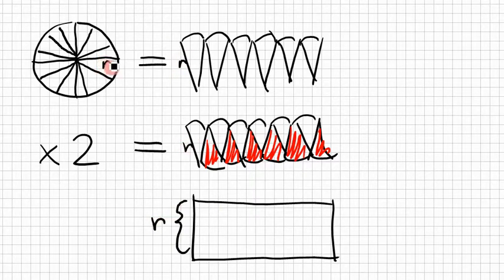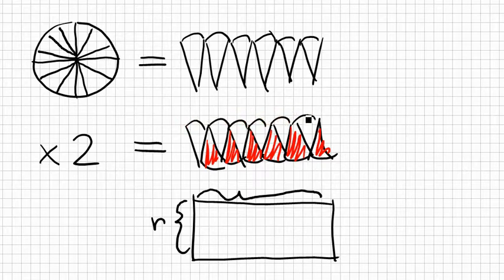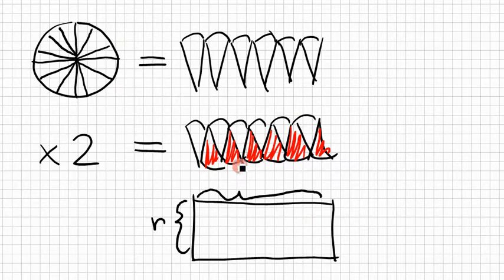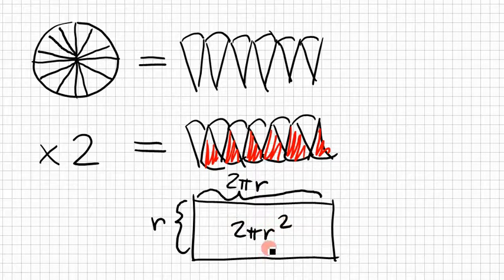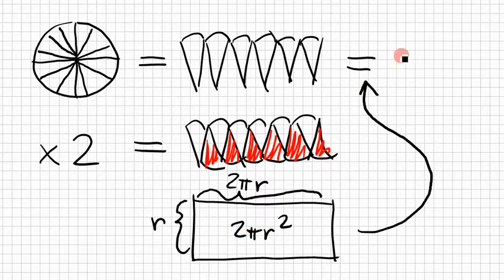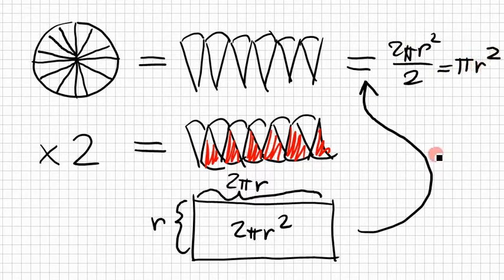The height of that rectangle is r, the radius. The width is going to become the circumference. This gets flattened out in the limit, and eventually it is simply the circumference of that circle. By definition of pi, this is 2πr — pi times the diameter of that circle. So this rectangle has an area of 2πr², which means the original shape has half of that area, 2πr² divided by 2, and that's what everybody knows: πr².